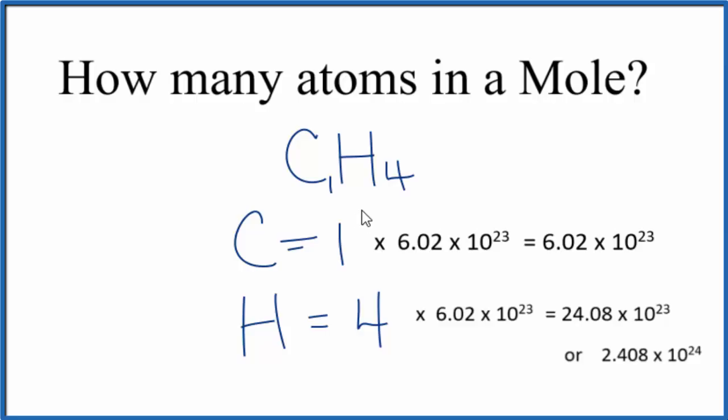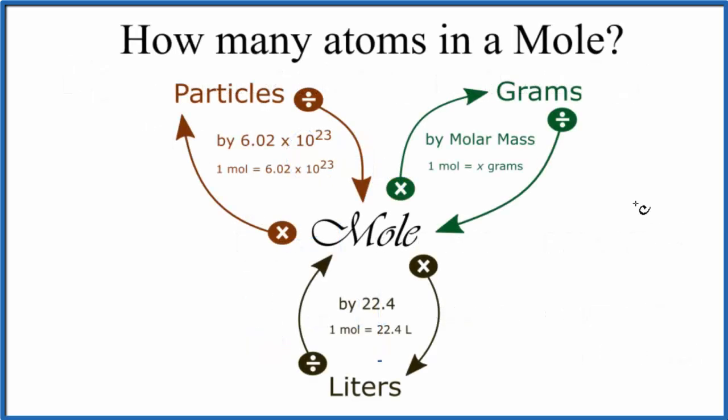But what if you were given the number of atoms and asked to figure out how many moles you had? Let's try that. So this is a helpful diagram as you study chemistry. If we have the mole here in the center and we're going from moles, we have one mole and we want to know how many particles, like our atoms, then we multiply by Avogadro's number.